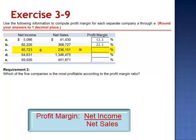For Company C, net income 85,723 divided by net sales 236,151, is a profit margin of 36.3%.